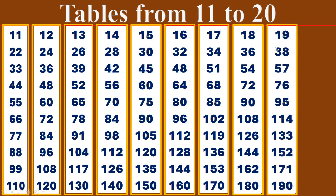19 times table. 19 ones are 19. 19 twos are 38. 19 threes are 57. 19 fours are 76. 19 fives are 95.